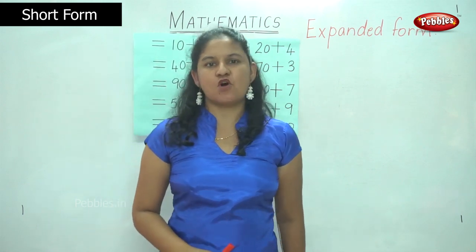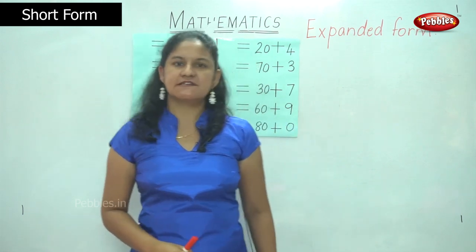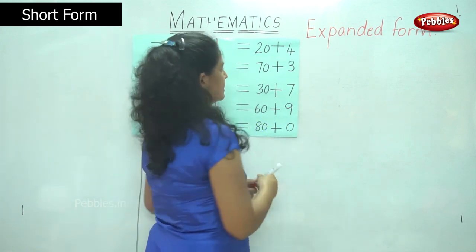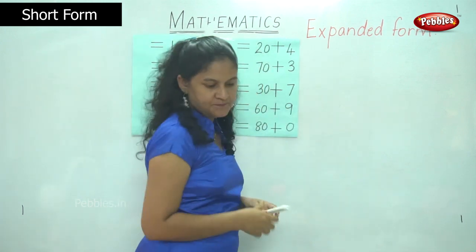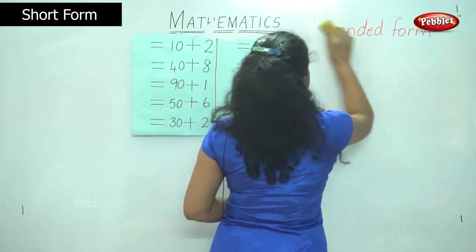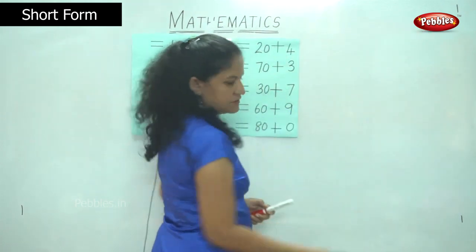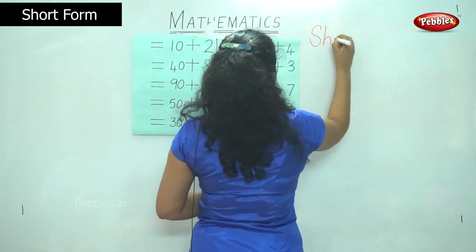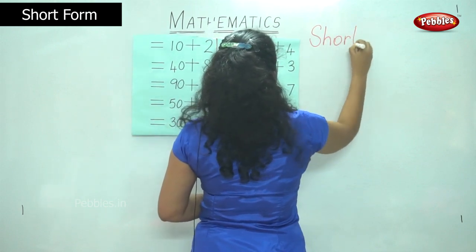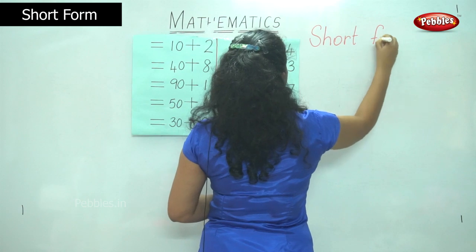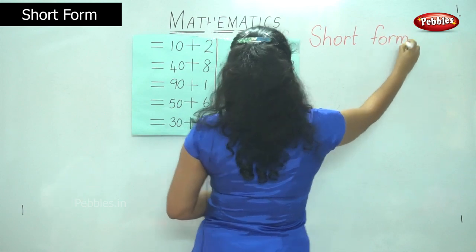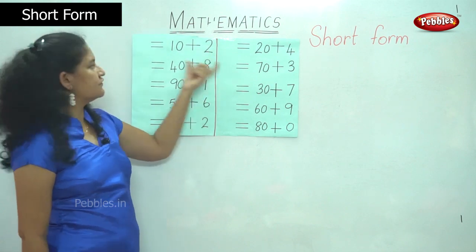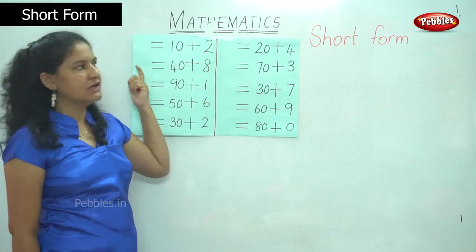We have seen the expanded form of certain numbers. Now we are going to see the short form of the numbers. We have the expanded form already written, and we have to find out what is the short form of the numbers.